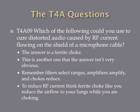Which of the following could you use to cure distorted audio caused by RF current flowing on the shield of a microphone cable? The answer is a ferrite choke. Filters will filter out everything except a select range of frequencies, and amplifiers will amplify a signal, but chokes will choke out a signal. Since the goal is to get rid of RF current flowing on the microphone cable shield, the obvious answer is the ferrite choke.